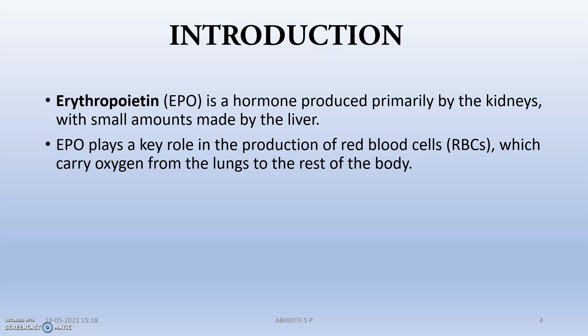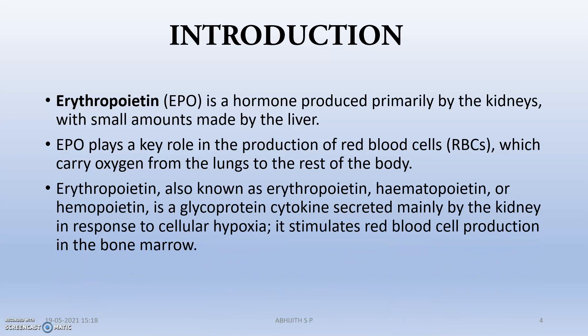RBCs are produced in the body through several steps from the bone marrow cells, and some of those steps are mainly controlled by erythropoietin hormone. Erythropoietin, also known as hematopoietin, is actually a glycoprotein cytokine secreted mainly by the kidney in response to cellular hypoxia, which stimulates red blood cell production.